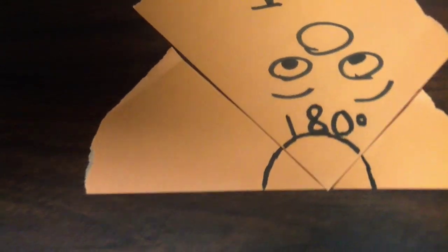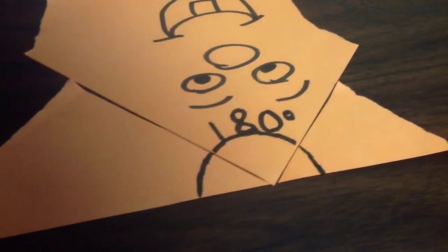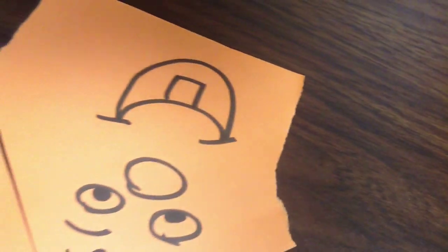If you don't believe me, take any triangle in the world, tear it apart, put it together like this. It will always make a straight line. No matter how big, small, or awkward the triangle is, it will always have this rule consistent with it.